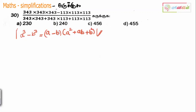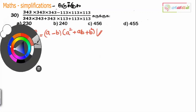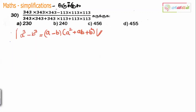We will talk about this formula in the video. If we know this formula, we will get the sum easier. Now, 343 into 343 into 343 — if A is equal to 343, that means B is equal to 113. If you know this formula, we will apply it here.